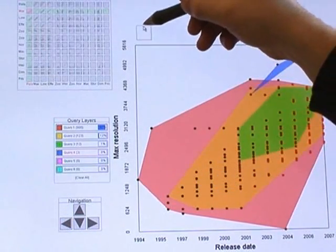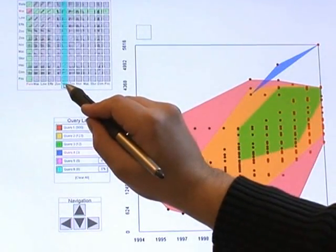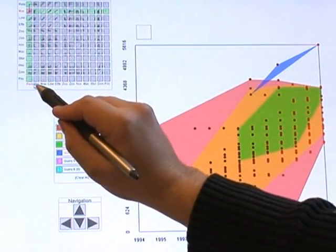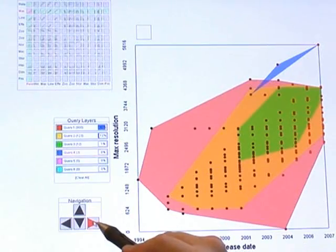The user wants to study the weight of the cameras, and thus drags and drops the weight column next to the current column. He then steps to the right again.